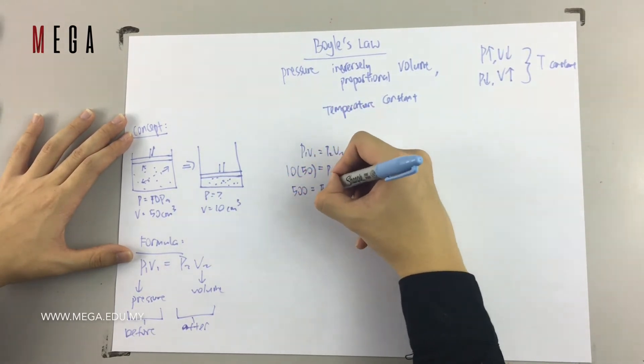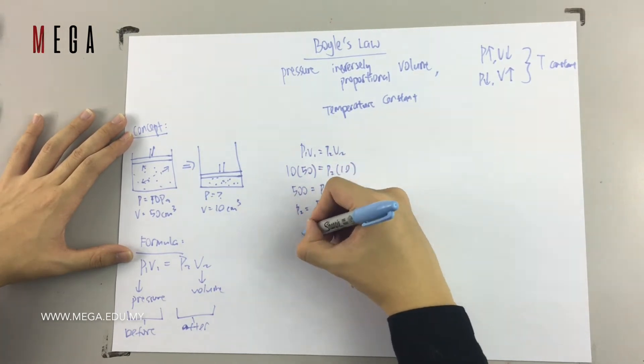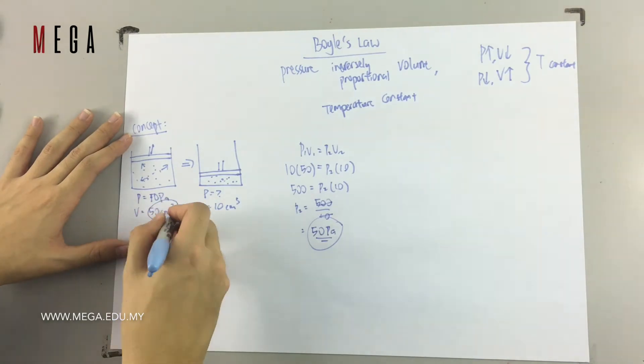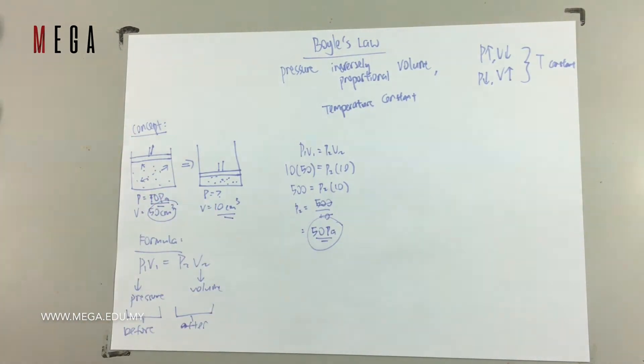What we got to do is put all the information into the formula. P1 is 10, V1 is 50, P2 we don't know, V2 is 10. After calculation, we get P2 equals to 50 Pa.